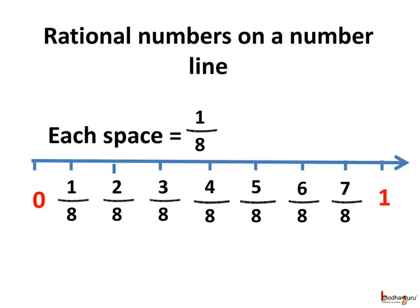Here we start from 0 moving towards the right side. So the first part is 1 by 8. Then we can put the next part 2 by 8, 3 by 8, 4 by 8, 5 by 8, 6 by 8, 7 by 8, and what is 1? It is 8 by 8 actually, which after reduction changes to 1.